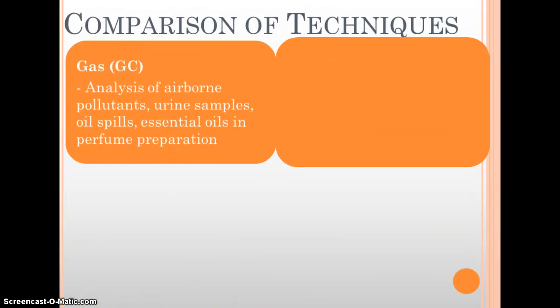Next is gas chromatography. This is going to be used to analyze airborne pollutants, urine samples, things left over from an oil spill. So like dispersants that are used to clean up an oil spill, they would use gas chromatography to see if any of those are left in the water.